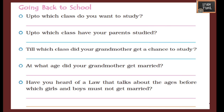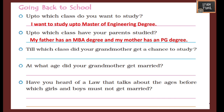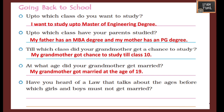Going back to school. Up to which class do you want to study — bachelor's degree, master's degree, or up to class 12? Write what you want to study. Up to which class have your parents studied? Write the degree of your father and mother separately. Till which class did your grandmother get a chance to study? In ancient days they would have studied till 10th or plus 2. At what age did your grandmother get married? They would have got married between 15 to 20 — there were early marriages in ancient days. Have you heard of a law that talks about the ages before which girls and boys must not get married? Yes — boys should not get married before 21 and girls not before 18.